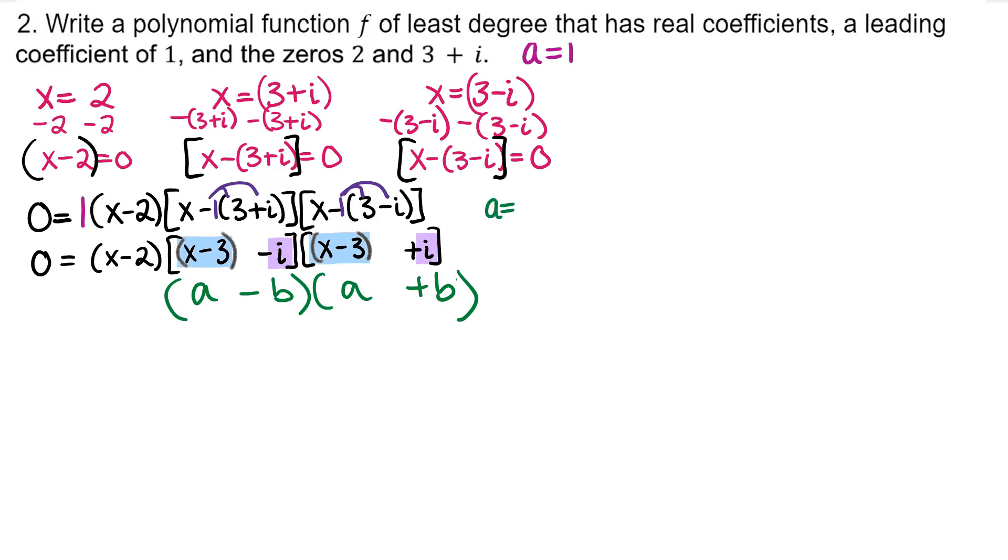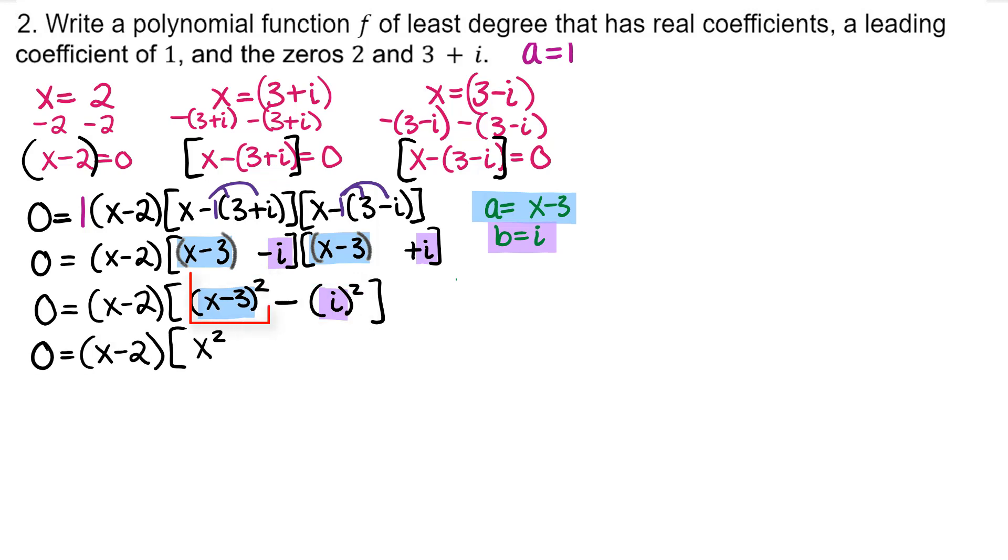This is in the form difference of perfect squares, where a is equal to x minus 3 and b is equal to i. This multiplies to be a squared minus b squared. Now we'll expand this binomial and simplify i squared.